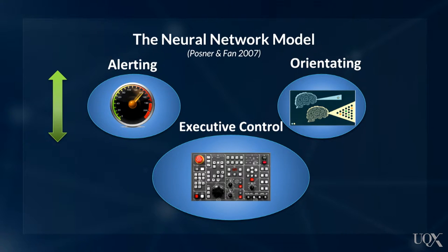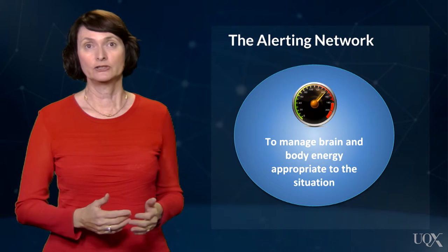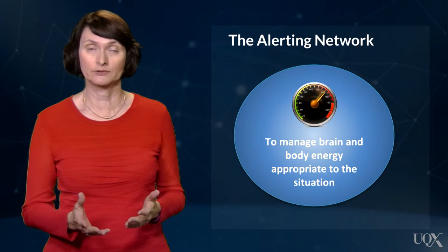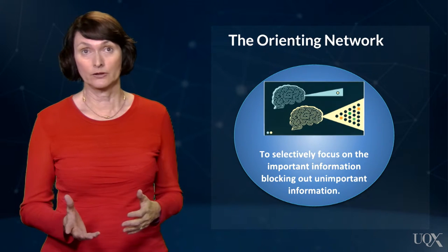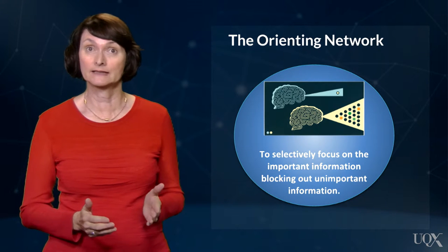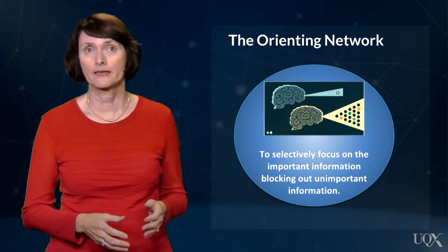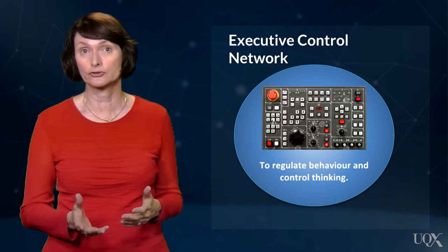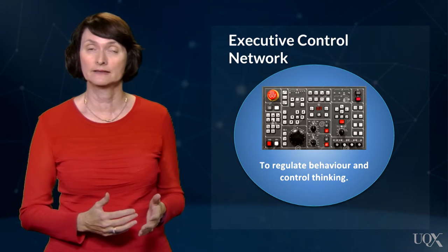We learnt that when we are truly motivated to engage in a learning activity, the greater attention we give that task. Posner and colleagues' neural network model helped us to understand that the brain's attentional system is made up of three distinct neural networks. This holds particular relevance to understanding the behaviours of classroom learning and the difficulties faced by some students. This model unpacks the alerting network, related to the ability to sustain attention over time; the orienting network, which directs our attention to select information for attentional focus; and the executive control network, which supports higher level control processes directing both our thinking and social behaviour.